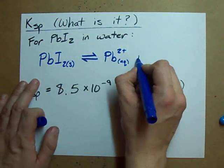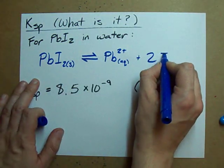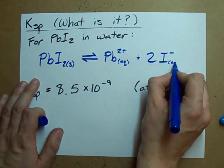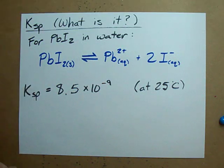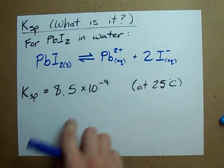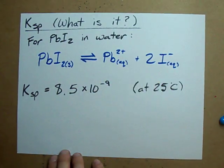And you're going to get two iodide ions. Iodine likes to have a charge of minus one, and because it's dissolved, it also gets a little AQ. When PbI2 dissolves, it makes a lead ion and two iodides. Piece of cake.